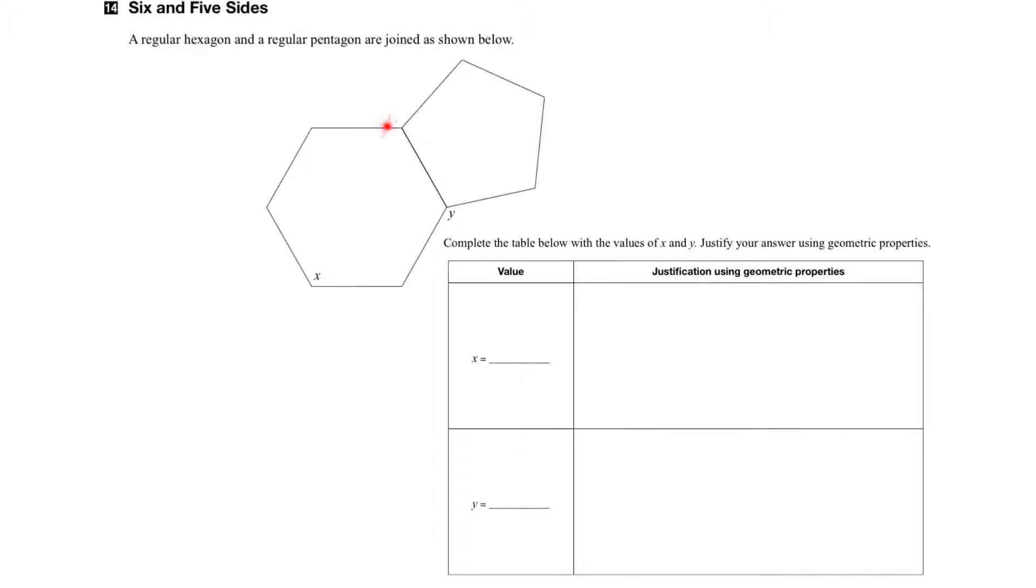In this question, we're given a regular six-sided figure, or hexagon, attached to a regular five-sided figure, or pentagon, and asked to find the values of x and y.